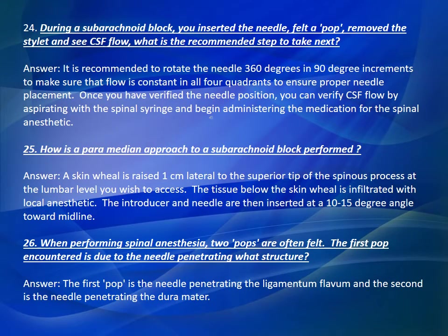Question Number 24: During a subarachnoid block, you inserted the needle, felt a pop, removed the stylet, and see CSF flow. What is the recommended step to take next? Answer: It is recommended to rotate the needle 360 degrees in 90-degree increments to make sure that flow is constant in all four quadrants to ensure proper needle placement. Once you have verified the needle position, you can verify CSF flow by aspirating with the spinal syringe and begin administering the medication.